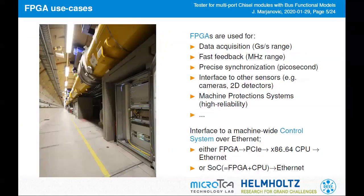The Chisel community is tightly connected to the RISC-V community, so the theme of designing CPUs comes up often. We, on the other hand, use FPGAs for various tasks. The most common topics are data acquisition, fast feedback, and synchronization — these are large machines so we want the entire machine to agree on time. We use FPGAs for precise synchronization, interfacing with sensors, 2D detectors, cameras, and machine protection systems, where high reliability and determinism of FPGA execution is very important.